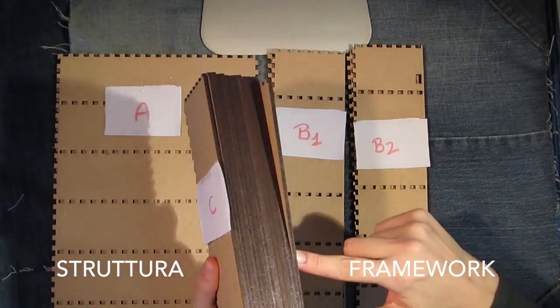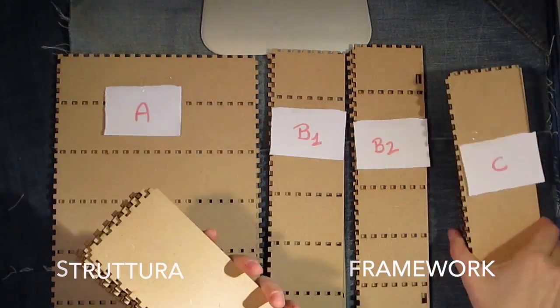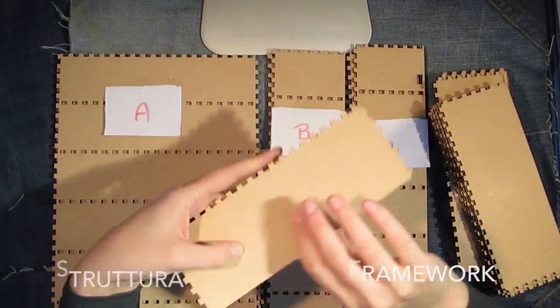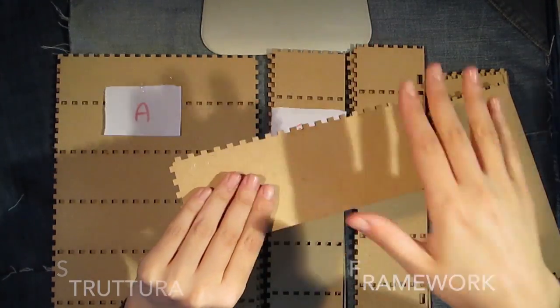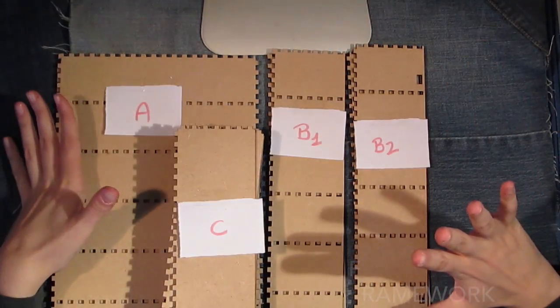Panel C will create a flat surface on which you will put your drawers. And these are the items you will need to create the framework.